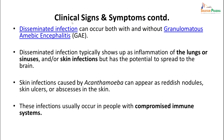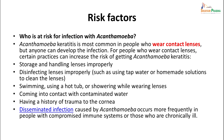Disseminated infection can occur both with and without granulomatous encephalitis and typically shows as inflammation of the lungs or sinuses and may also show skin infection, with the potential to spread to the brain. Skin infections usually appear as reddish nodules, skin ulcers, or abscesses. These infections usually occur in immunocompromised individuals.